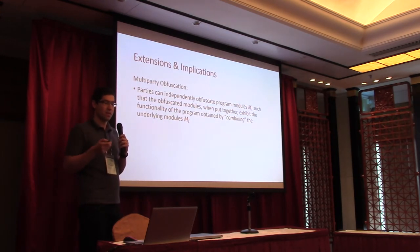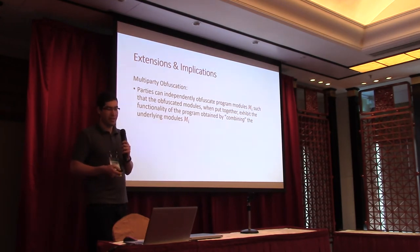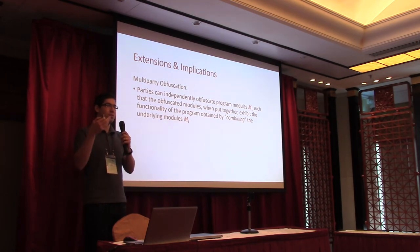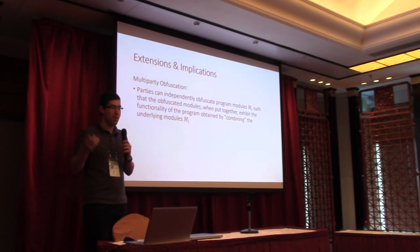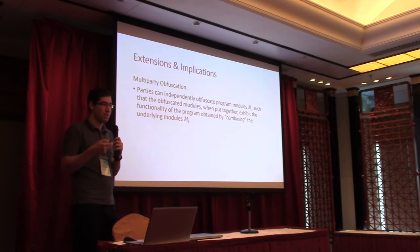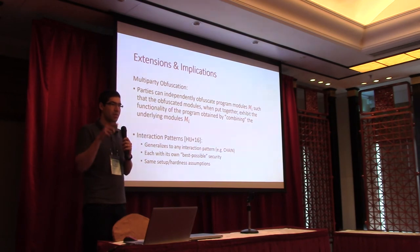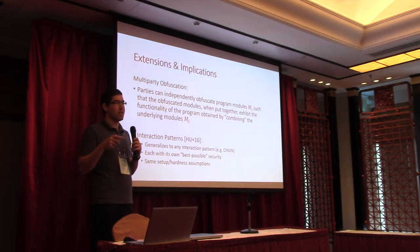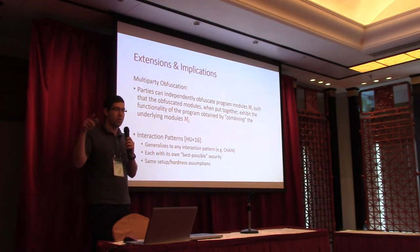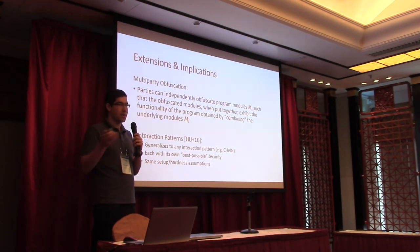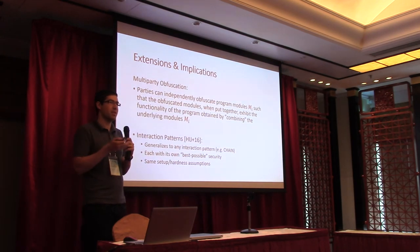We have several extensions and implications of this result. The first is a notion we call multiparty obfuscation — a variant of multiparty computation where the inputs of the players are modules of code, not inputs for a function. Each player can take its code or some module it wrote, obfuscate it in some way, and send it to the evaluator, which can take all the modules and compile them into one big program without revealing any information about the underlying modules. Additionally, our techniques generalize to any interaction pattern: you define any graph in which parties communicate according to the edges, and eventually the output reaches the evaluator — we can support any such pattern with the same assumptions, achieving the best possible security for that interaction pattern.